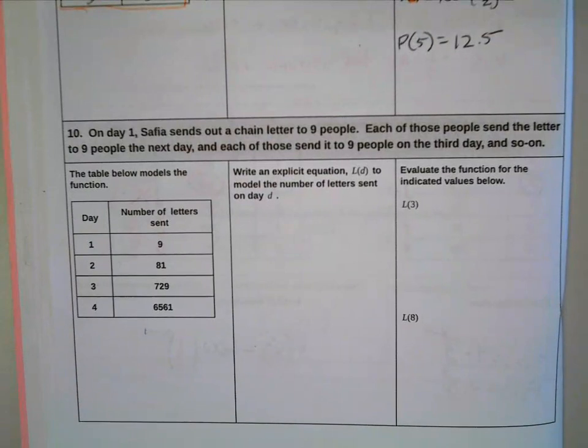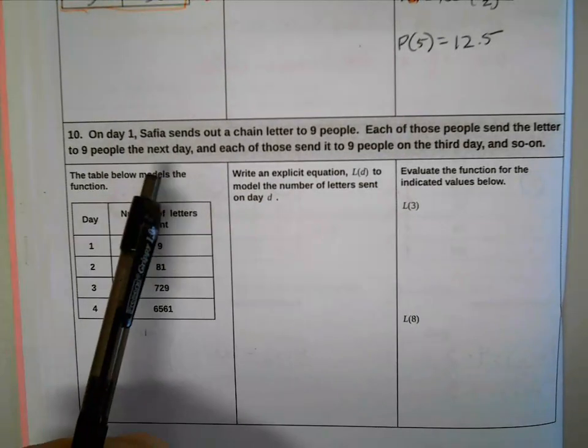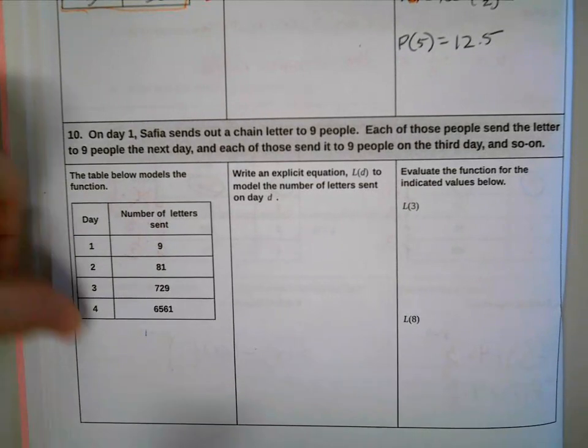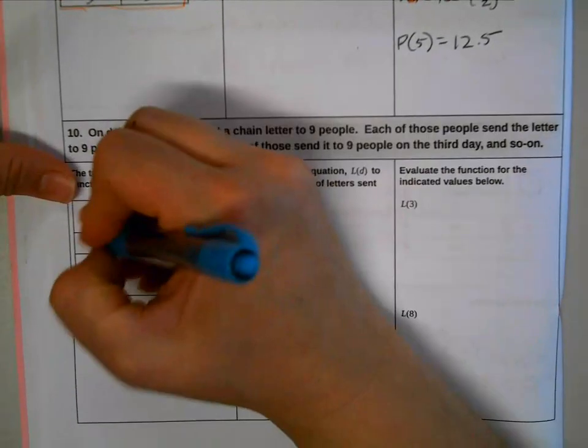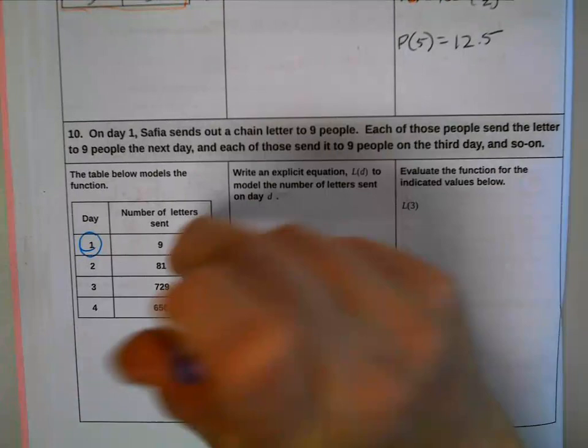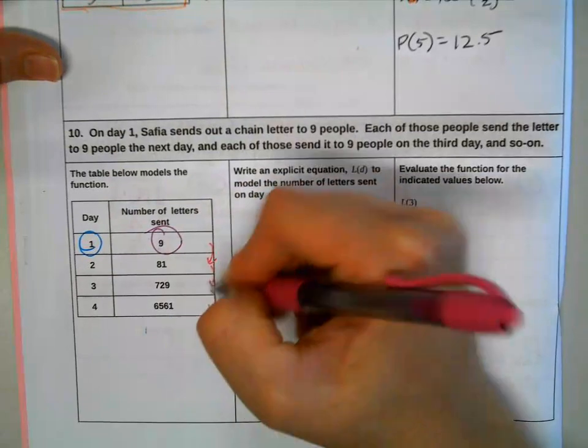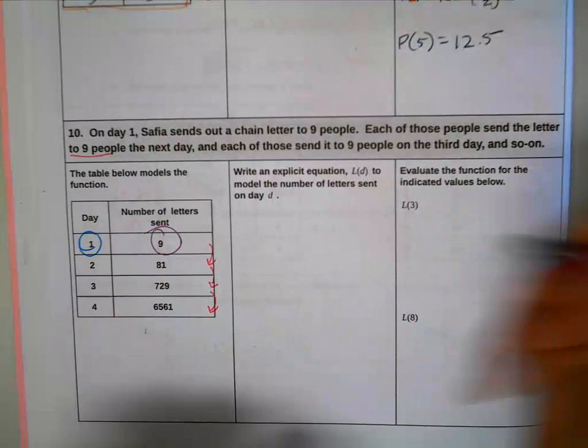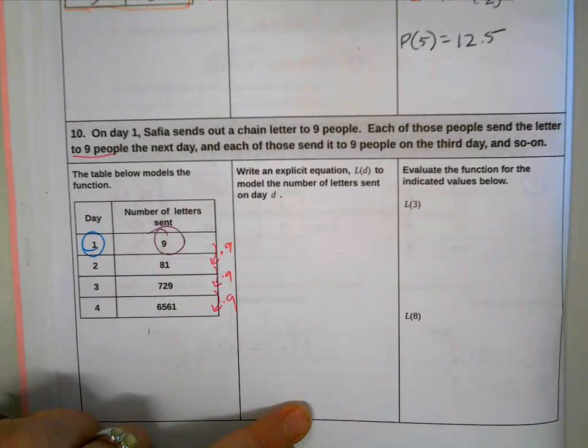Number 10. On day one, Safiya sends out a chain letter to nine people. Each of these people send a letter to nine people the next day, and each of those send it to nine people on the third day, and so on. So we have the table already, days and the number of letters sent. So all we're going to have to do is find our starting input, our starting output, and our pattern. And the pattern sometimes, especially with these big numbers, it's kind of tough, but it tells us it's by nines. So I'm going to say times nine, times nine, times nine. Check to make sure it's the correct number, and it is.